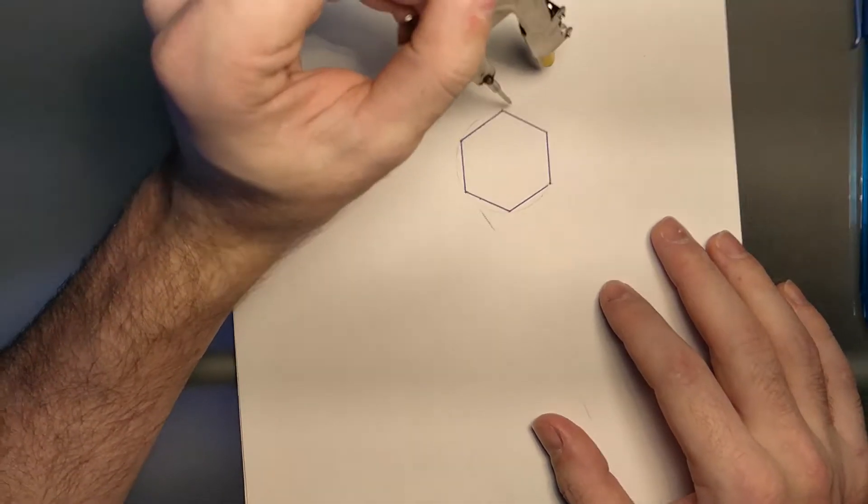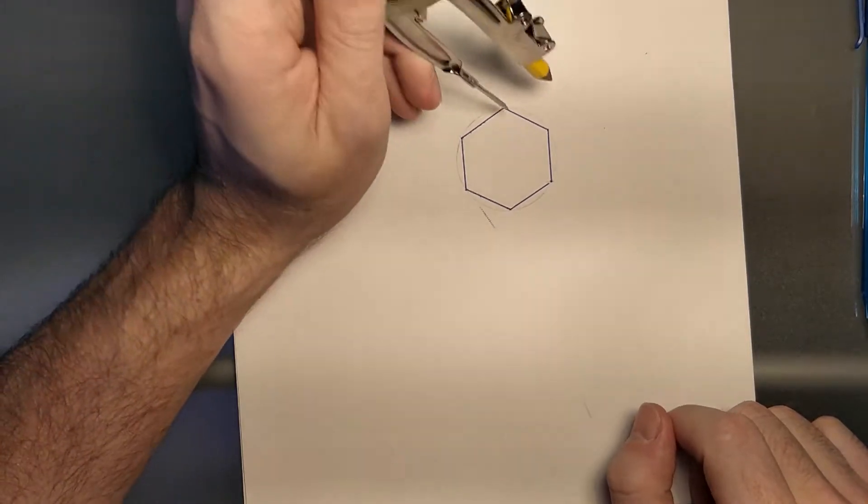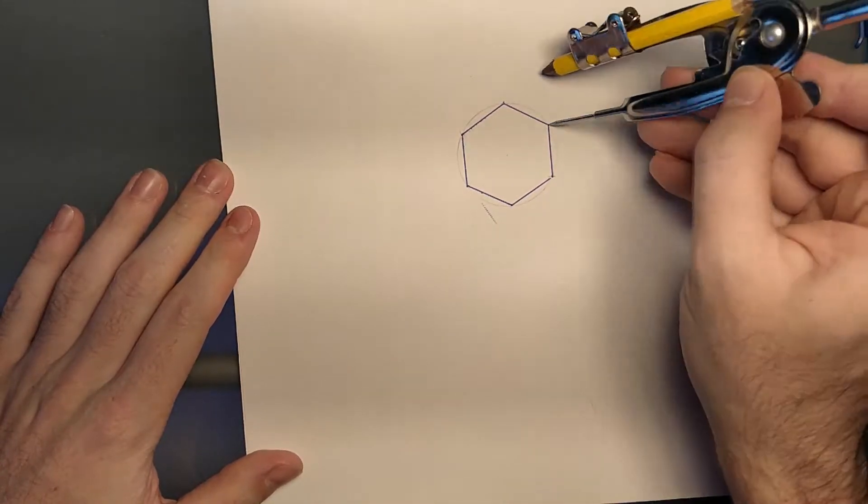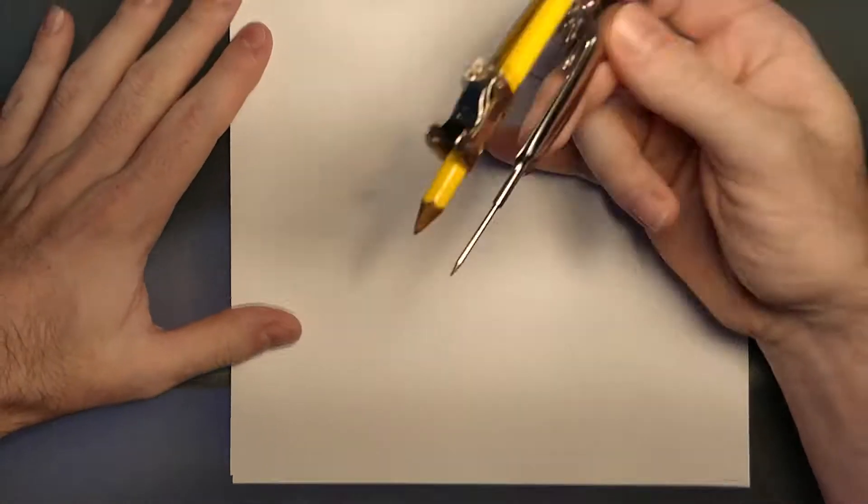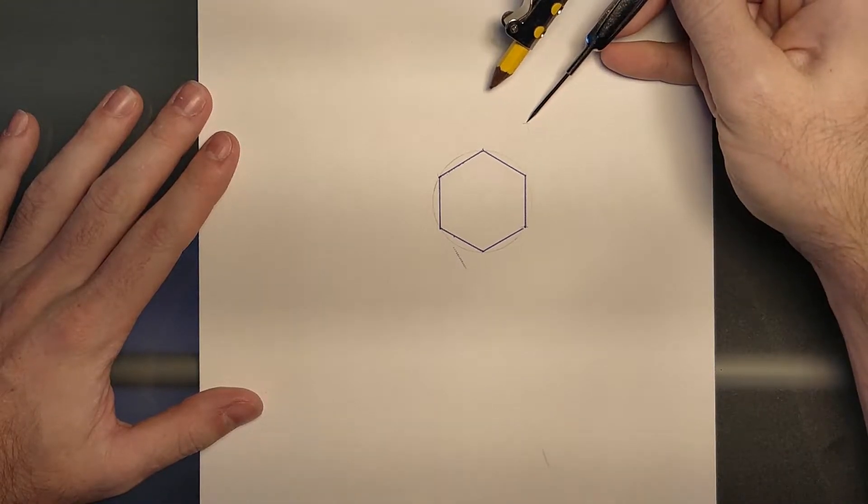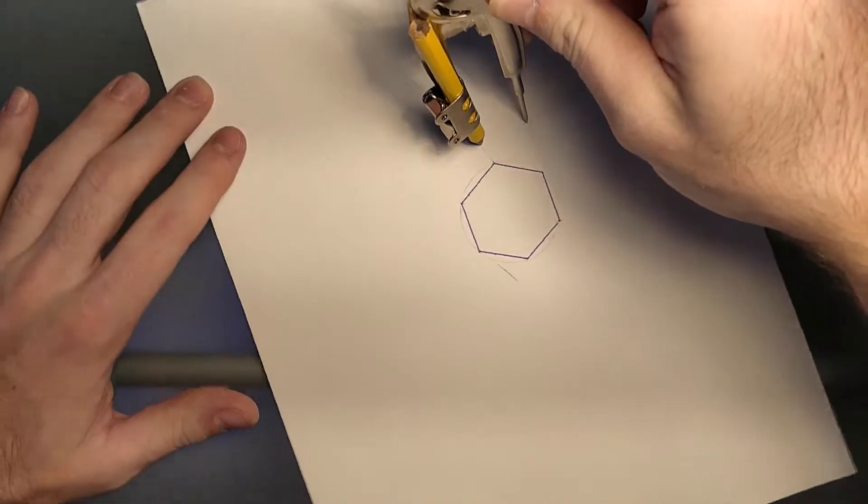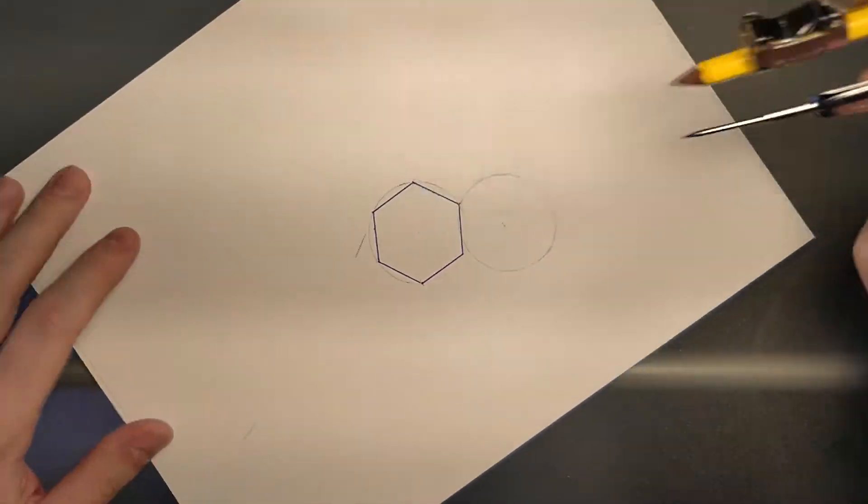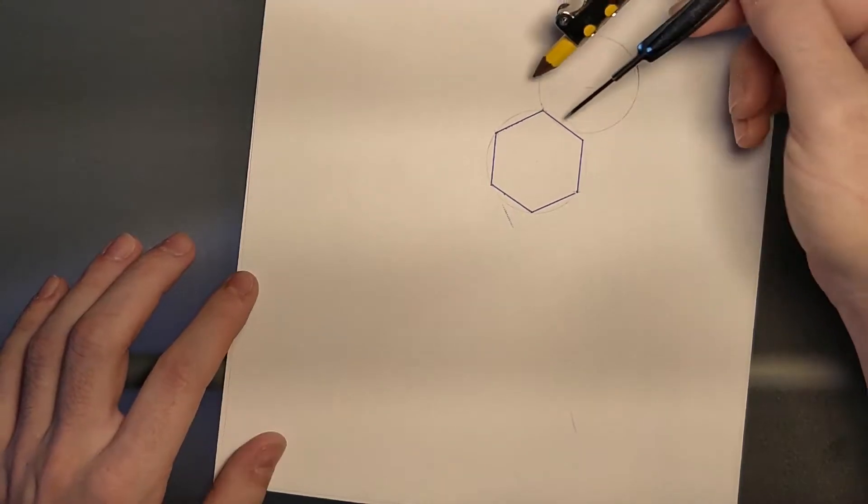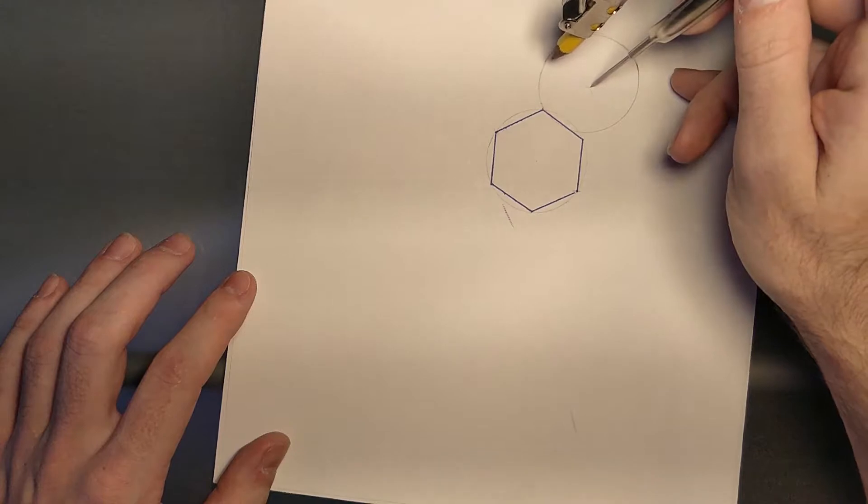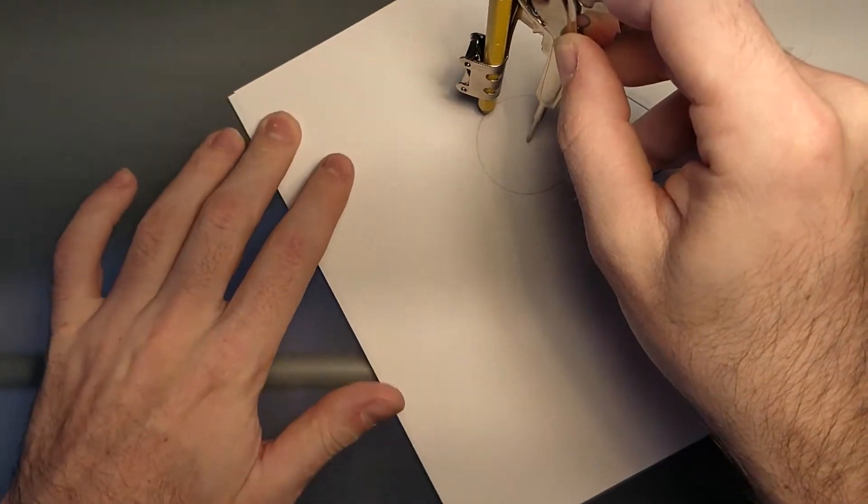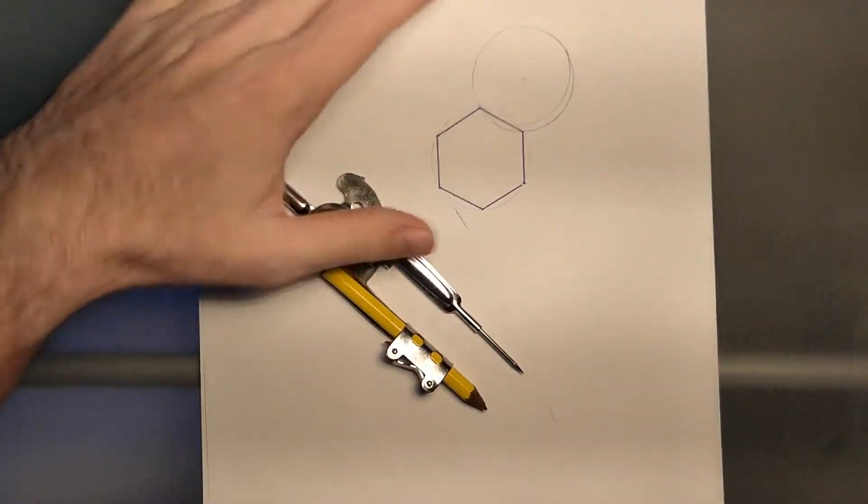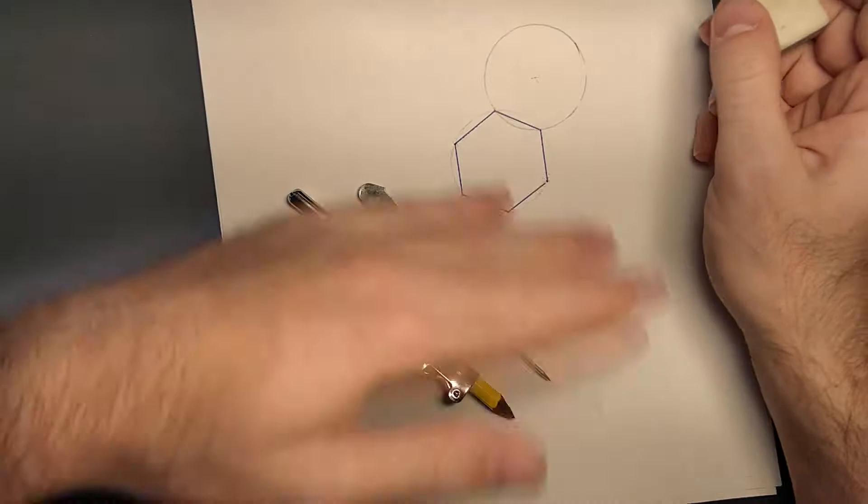So if we want to find the center of our next hexagon, what we can do is using two points, gently scribe a little X marks the spot. I hope that comes up on camera for you guys. Then I just take the center point and draw myself another circle. Whoopsie doozle. That's another good reason to go gently.